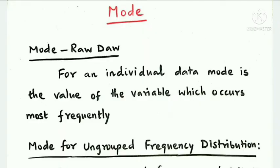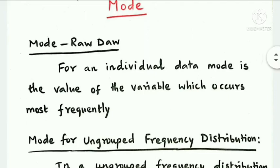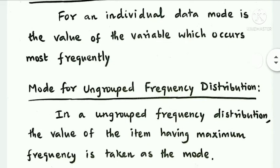Mode in raw data. For an individual data, mode is the value of the variable which occurs most frequently.